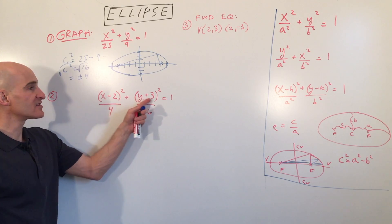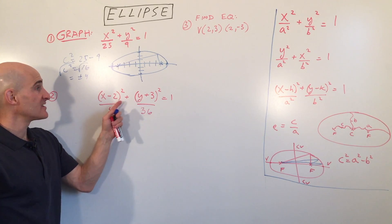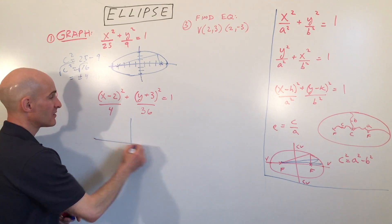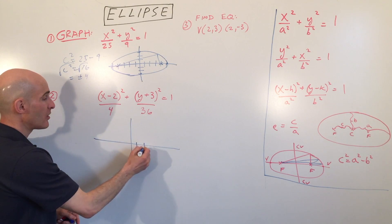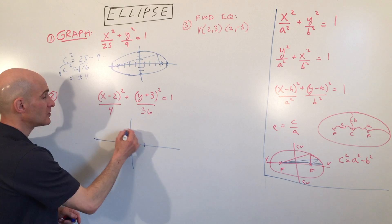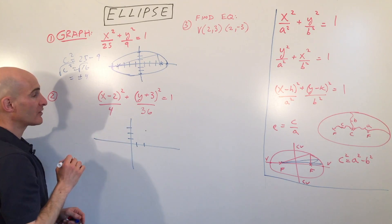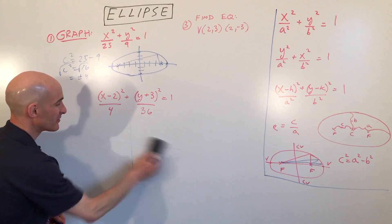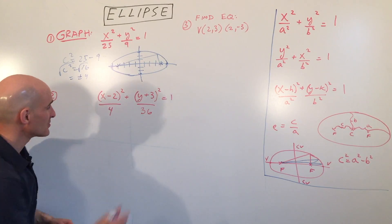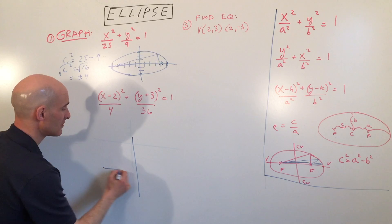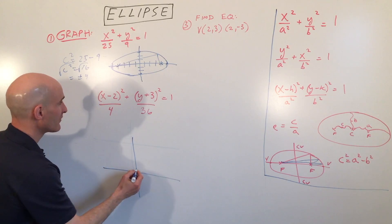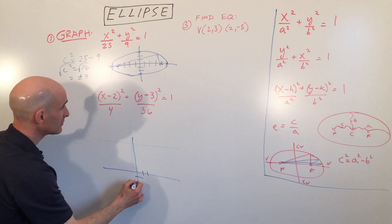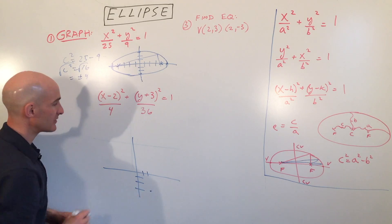In the next example, we can see the center is at positive 2, negative 3. To graph this, we locate the center at right 2, down 3. I'll draw it a little lower to give myself more room, placing the center point there.